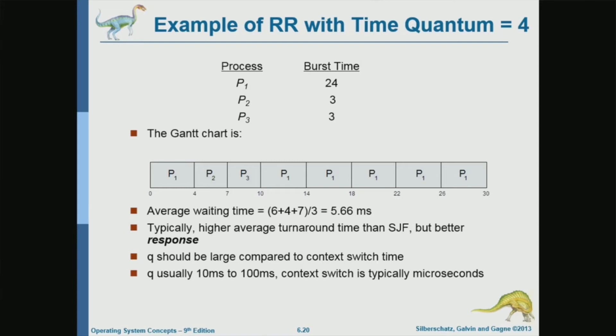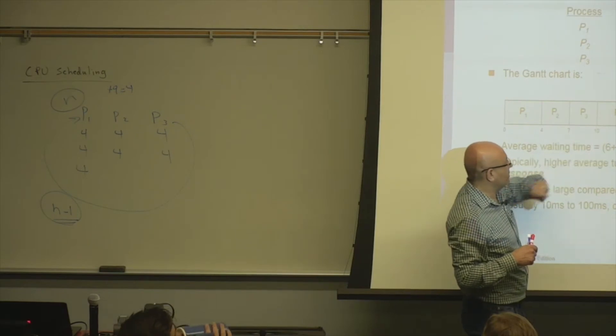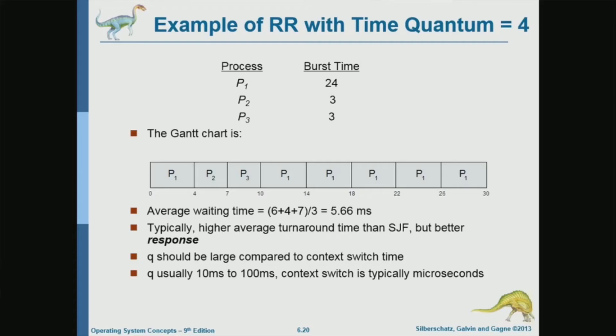So the system is going to give four time units to P3. And again, P3 is not going to use the entire time quantum that is allocated to it. It's going to do something after three time units, requesting I/O or terminating. Then the system is going to give, now at time 10, how many processes are in the ready queue? How many processes are in the ready queue at time 10? One. Only one. Because these are either waiting or terminated. The only ready process is P1.